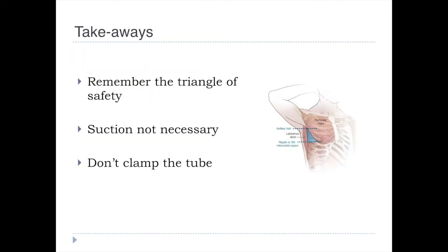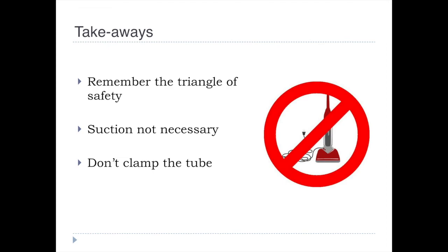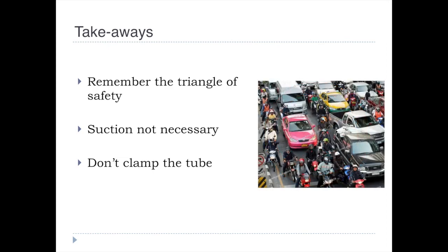Overall, there are three things to remember. First, remember the triangle of safety — it's very important to keep proper landmarks and place the chest tube where it belongs. Second, suction is not always necessary; applying suction immediately can increase the chance of re-expansion pulmonary edema. Third, we don't have to clamp the tube — it can be left as a one-way valve. Air is going to come out of the pleural cavity, and nothing is going to go back in.